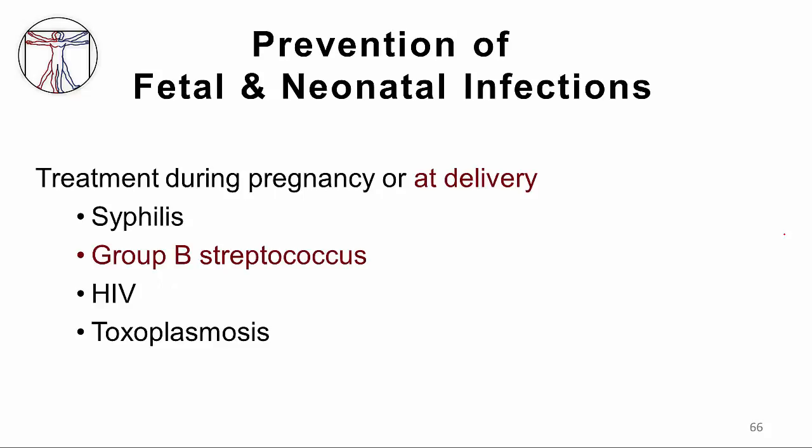With regards to prevention using treatment during pregnancy or at delivery, there is a two-step process: you must diagnose the infection occurring during pregnancy or at delivery, and then provide treatment. All pregnant women are screened for syphilis at least once during pregnancy; if infected, they are treated and then tested for cure. Group B streptococcus, once the most common cause of neonatal sepsis, is now often prevented by screening mothers in the last trimester and treating them at delivery if they are carriers. Diagnosing HIV in a pregnant woman leads to antiretroviral therapy for the woman and her newborn, effectively preventing many HIV infections.